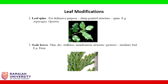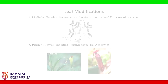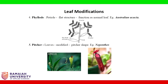Scale leaves: they are thin, dry, stalkless, membranous structures which protect the axillary bud. Example: Ficus. Phyllode: the petiole becomes a flat structure and functions as a normal leaf. Example: Australian Acacia.